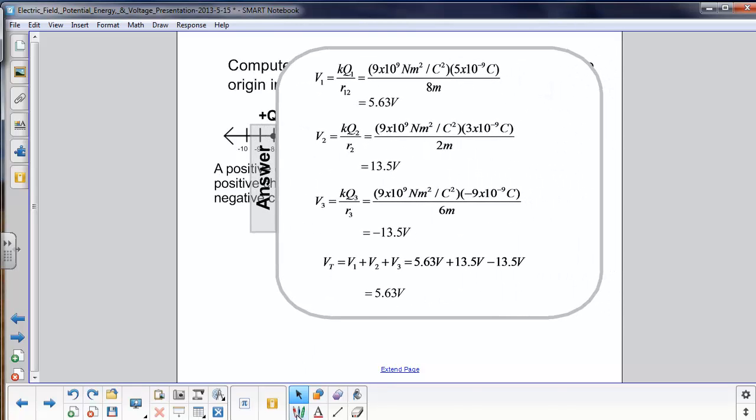So we bring it out here, and you can see this is the voltage due to charge one. We put charge one over here, five times ten to the minus ninth coulombs. It is eight meters away. Even though it's to the left, we really don't care here. The important part is the sign of the charge.